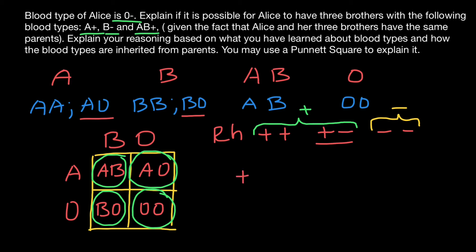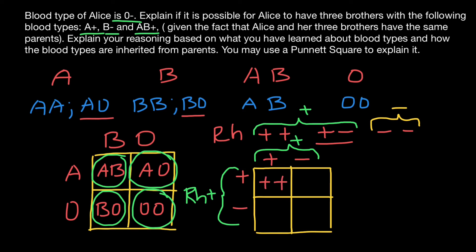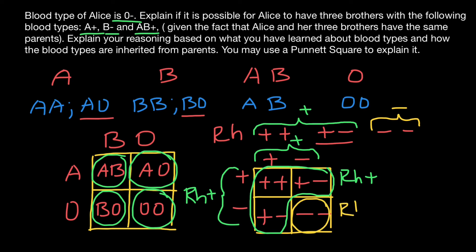Now imagine that both parents have the heterozygous genotype: positive-negative. Overall, each parent is going to be Rh positive. Looking at the Punnett Square for their progeny: one child inherits two positive Rh alleles, one inherits positive and negative, one inherits positive and negative, and one inherits negative-negative. So three quarters of the progeny are going to be Rh positive and one quarter are going to be Rh negative.